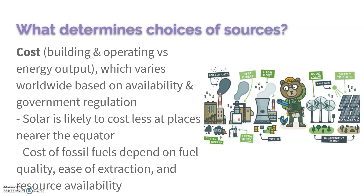A couple of examples: solar is more likely to cost less at places near the equator, where the sunlight is more direct, so they get more solar energy and can sell more. We also see that the cost of fossil fuels varies a lot based on the quality of the fuel, how easy it is to extract from the earth, and the availability of that fossil fuel.